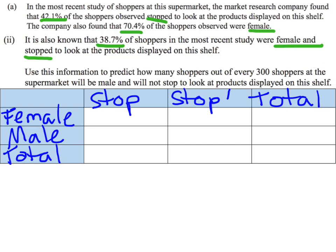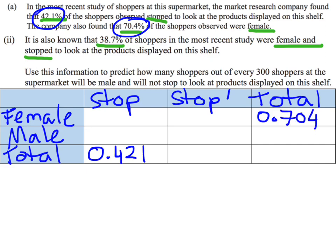So we've got that 42.1% of them stopped to look at the stuff, so our total for stopping is 0.421. Then we're told that 70.4% of them were female, so our total female is 0.704. Then we're told that 38.7% were female and stopped, so female and stopping is 0.387.